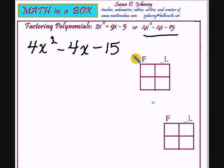Now the F stands for first. Our first term is the 4x². 4x² can be obtained by multiplying 4x times x or it can be found by multiplying 2x times 2x.